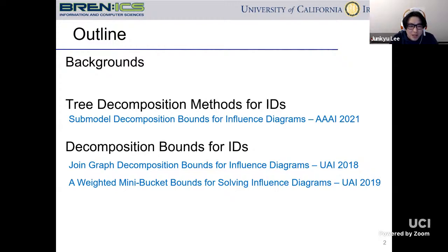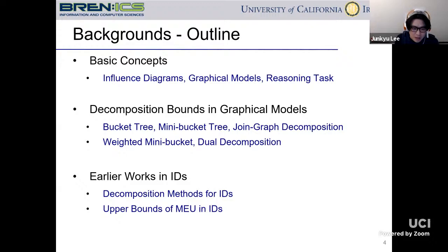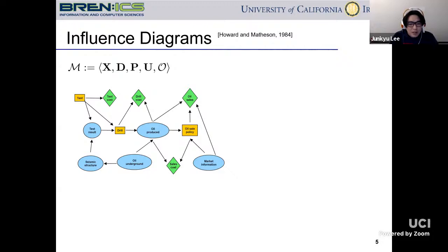This presentation is divided into three parts. The first is backgrounds, the second is about decomposition methods for influence diagrams, and lastly, it's about computing the upper bounds for the maximum expected utility in influence diagrams. For the background section, we will first review some basic concepts in influence diagrams, graphical models, and reasoning tasks. I'll also point out existing decomposition bounding methods in probabilistic graphical models, and wrap up by pointing to some earlier works in influence diagrams.